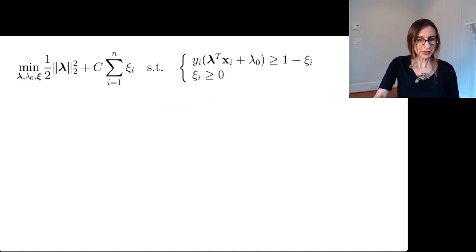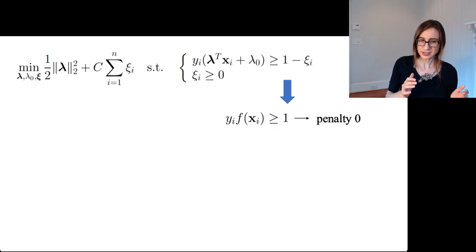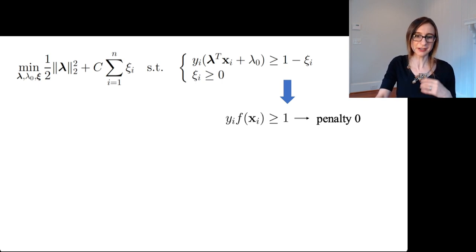Alright, so let me give you a little bit more perspective on this. So if the margin is actually bigger than one, it doesn't have to pick up any slack. There's no slack to pick up. So xi can happily be zero and everybody's happy. The objective doesn't suffer. The constraint satisfied. We're good.